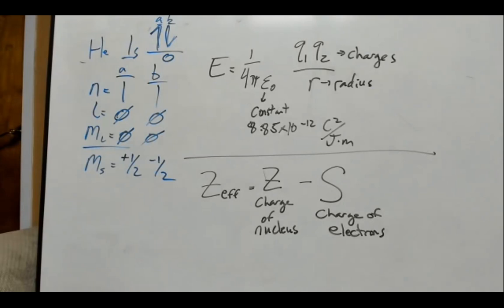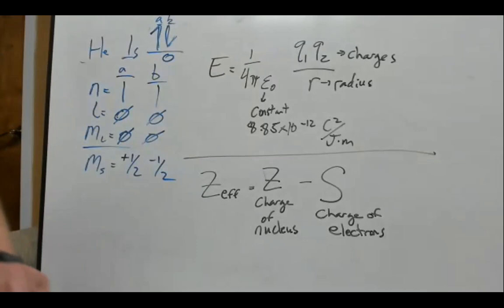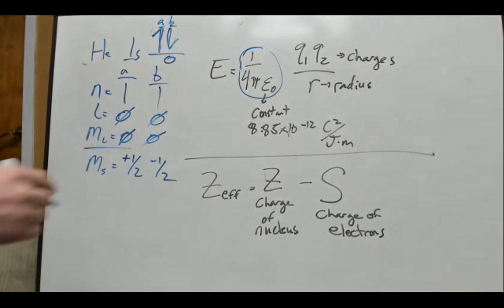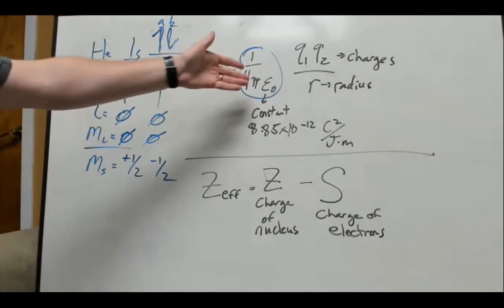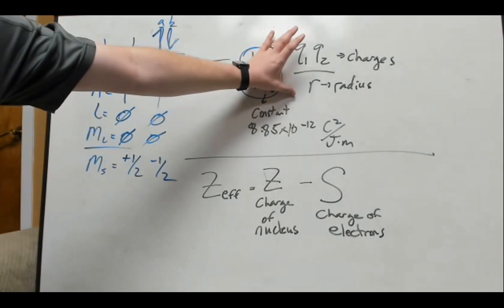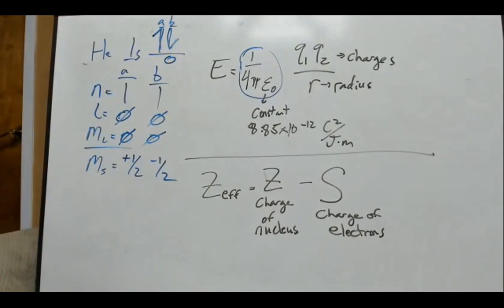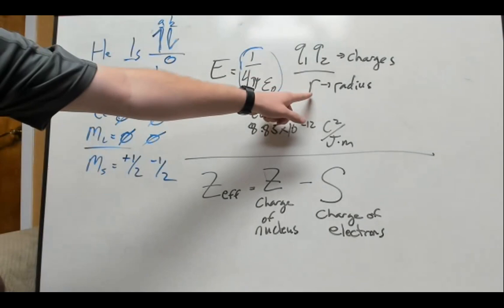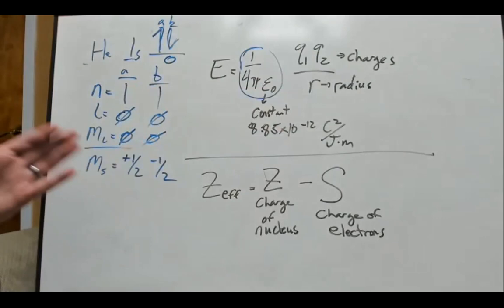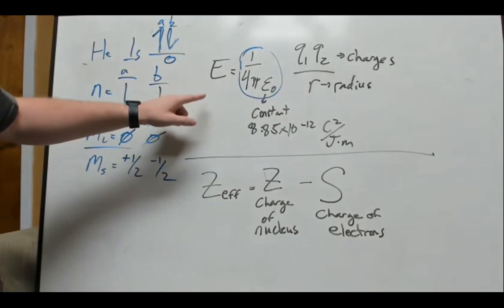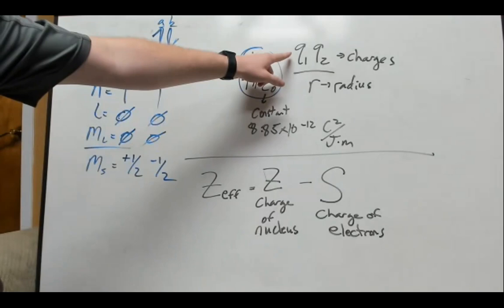Let's look at an example. The top equation is Coulomb's law: energy equals one over four pi epsilon-naught — a constant equal to 8.85 × 10⁻¹² — times Q1 times Q2 divided by r. The constant portion doesn't change, so we focus on Q1, Q2, and r. Energy is inversely related to the distance r between particles, so as particles get closer, energy goes up.